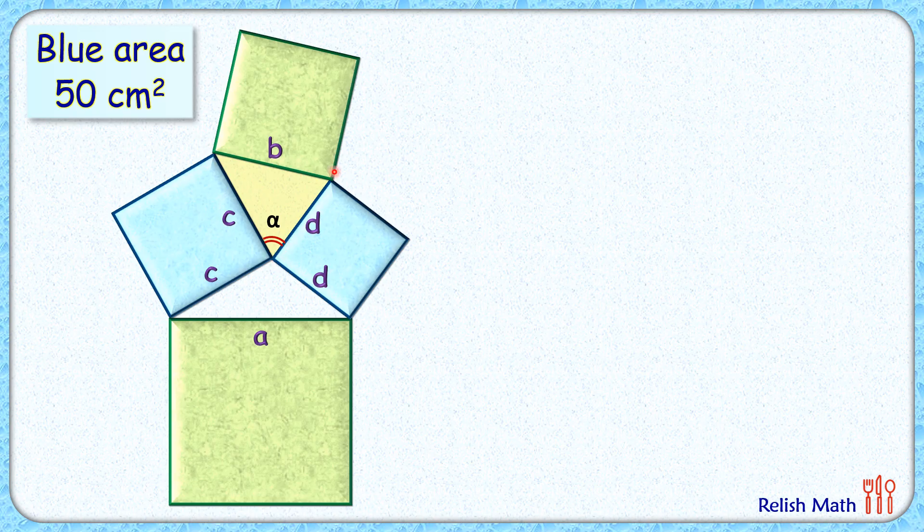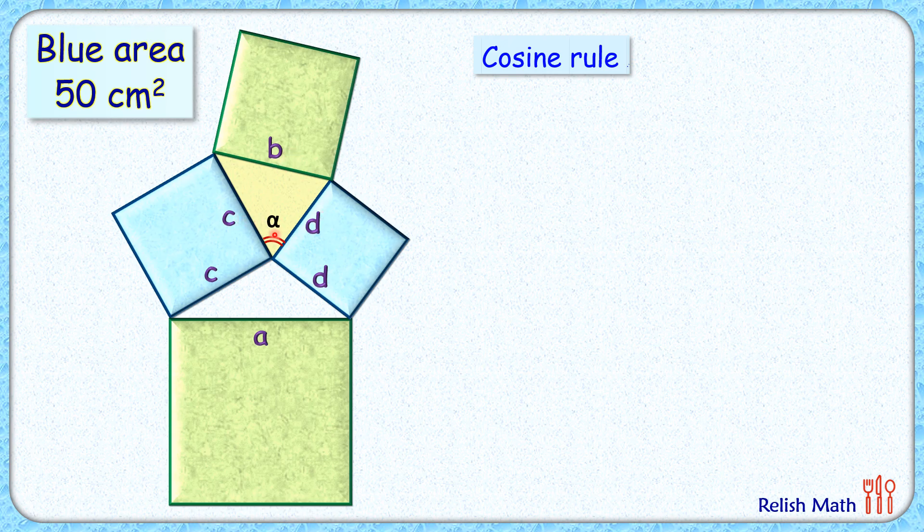In this yellow triangle, if we apply the cosine rule - that is, in any triangle where three sides are given and one angle is given, then the relation between these three sides and the angle is given by the cosine rule.